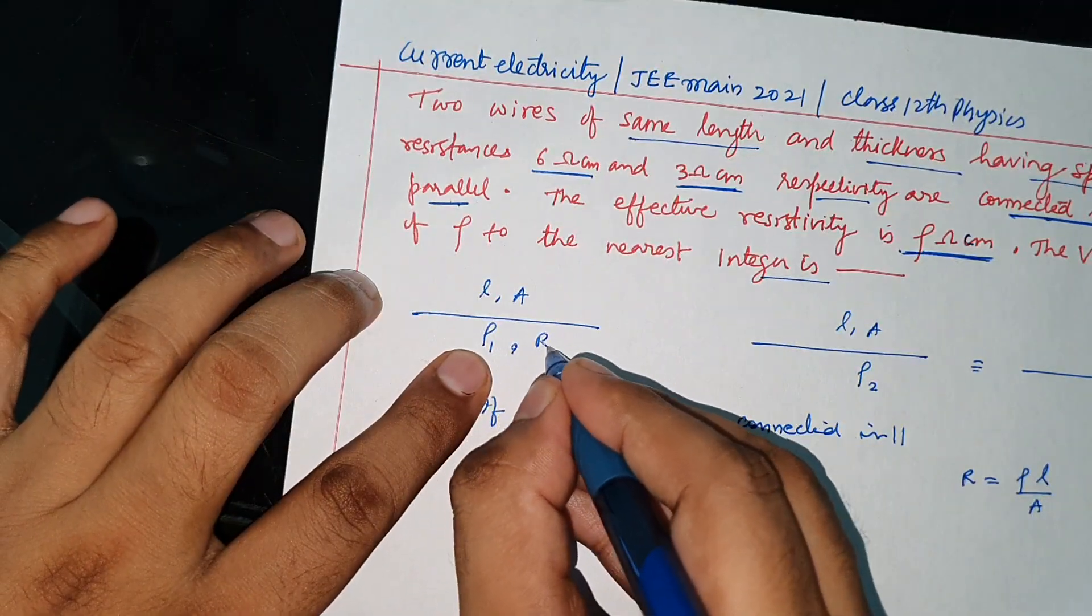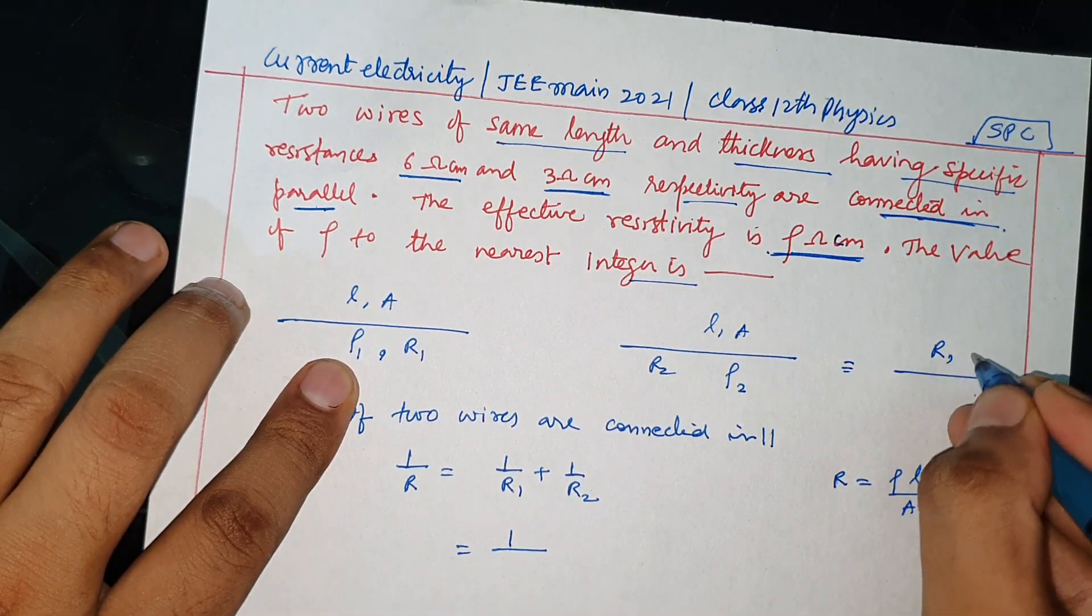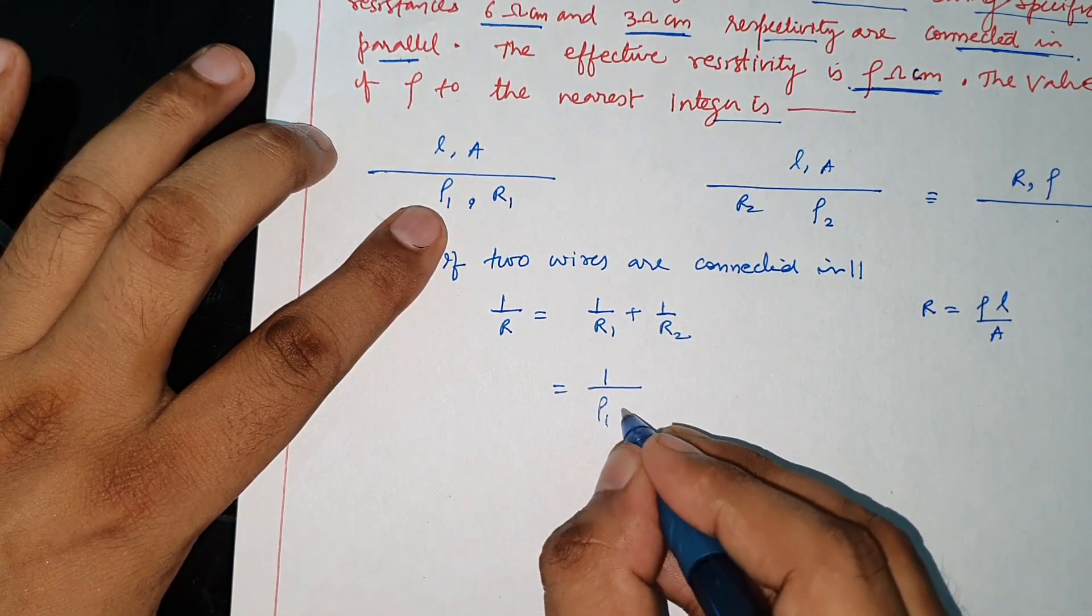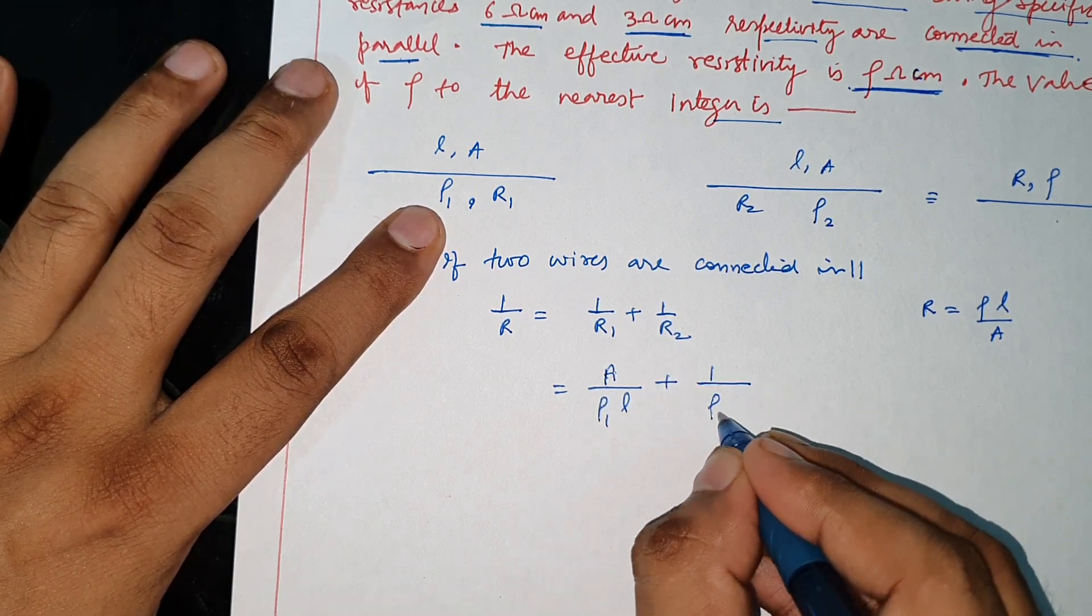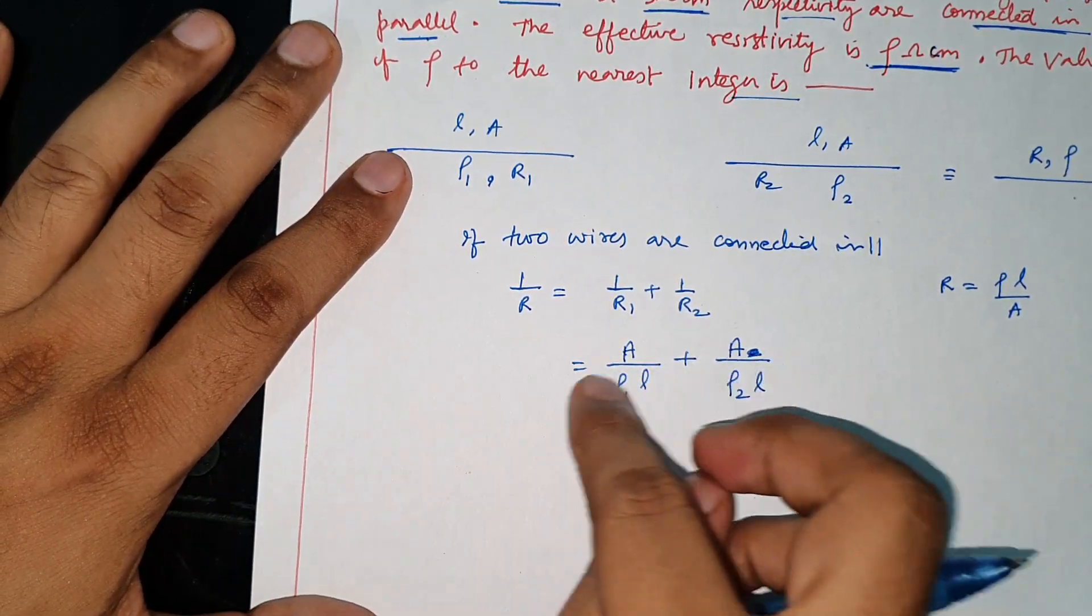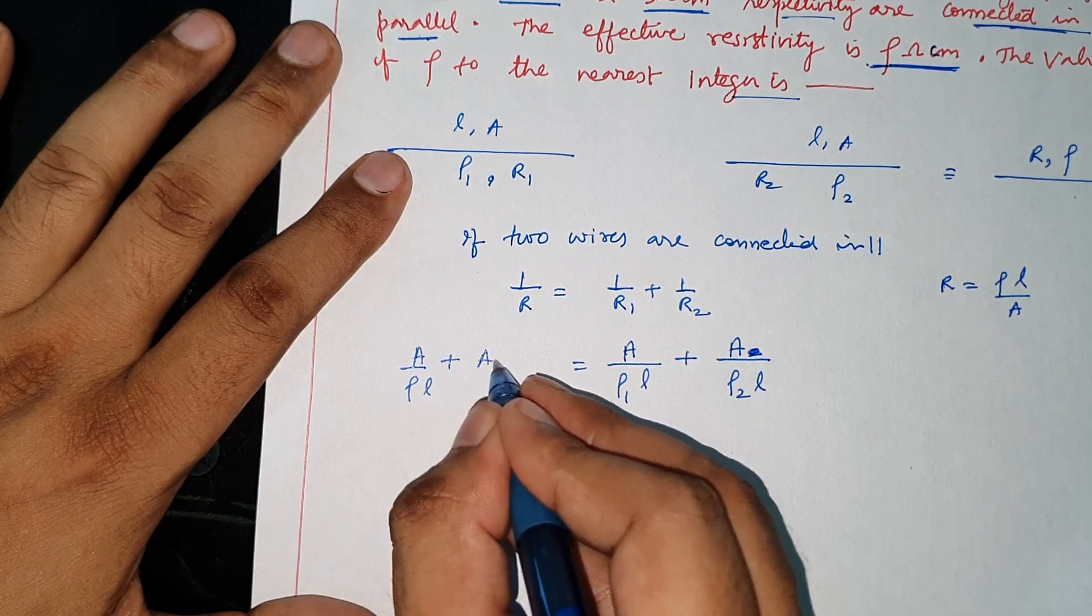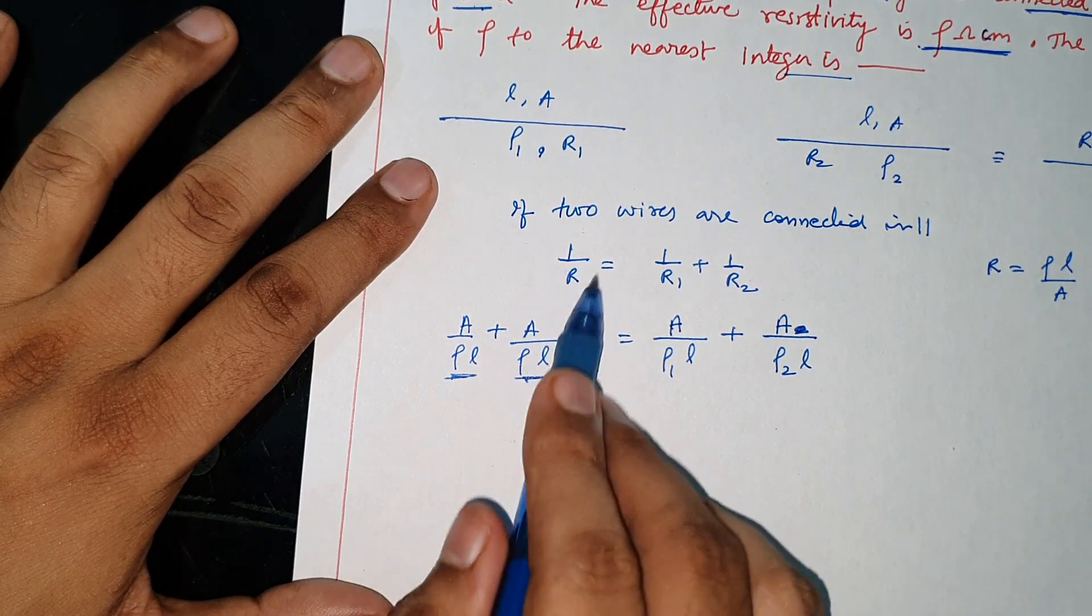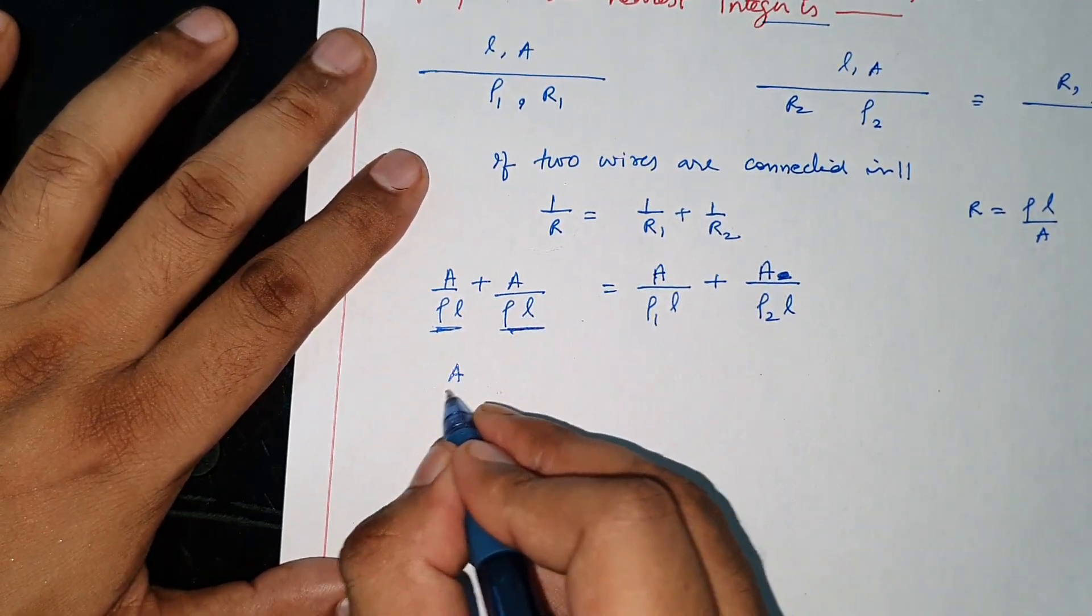A upon rho L equals A upon rho 1 L plus A upon rho 2 L. Effective total, this is equal to A over L common.